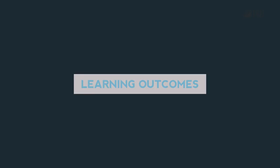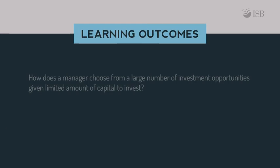Earlier in the course we talked about the main objective of a manager being maximizing shareholder wealth. How does a manager go about achieving this? This requires a manager to select projects that add to shareholder wealth, but usually there are a large number of projects to choose from. Further, the manager does not have unlimited access to capital, so there are constraints on how much capital she has for investments. This is the area of capital budgeting.